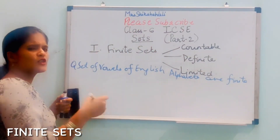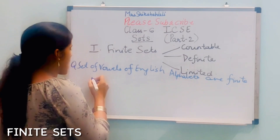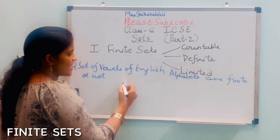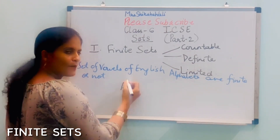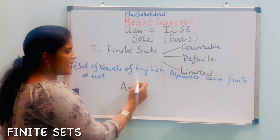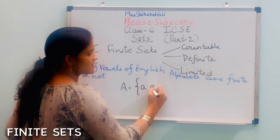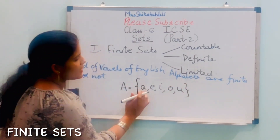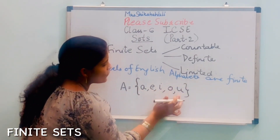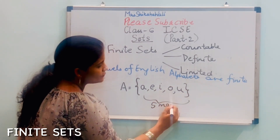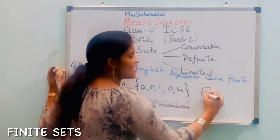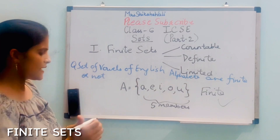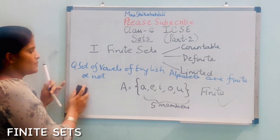So, let's write it in set form. A is our set, with curly brackets. Vowels are A, E, I, O, U. Now count how many members there are — one, two, three, four, five. Five members. This means these are a finite set.